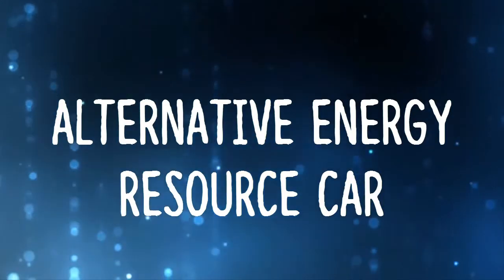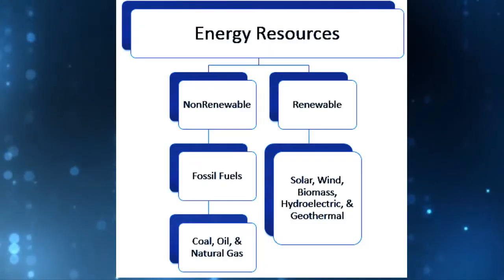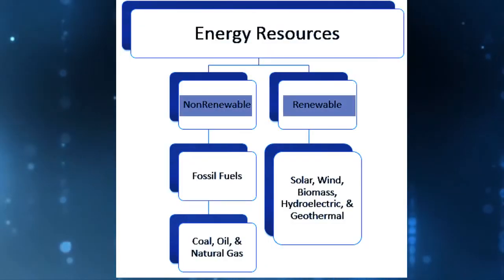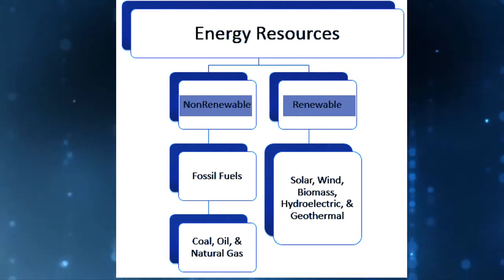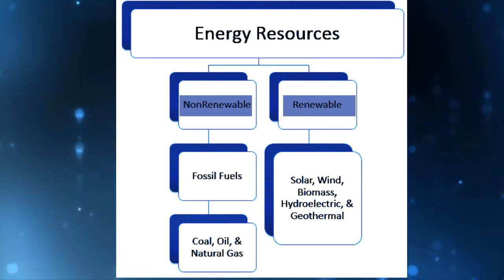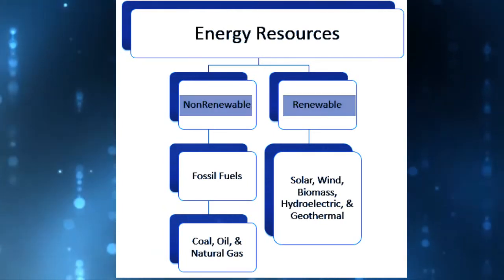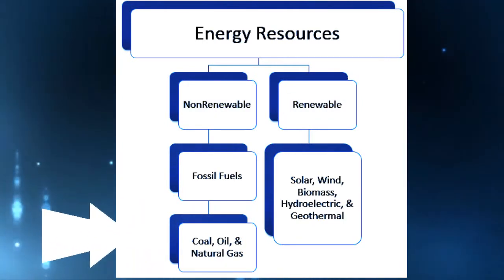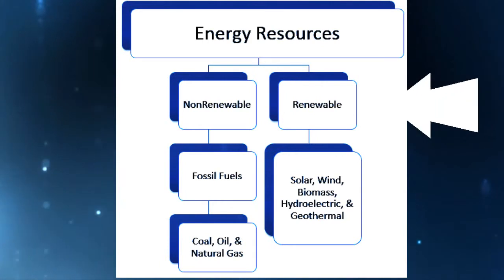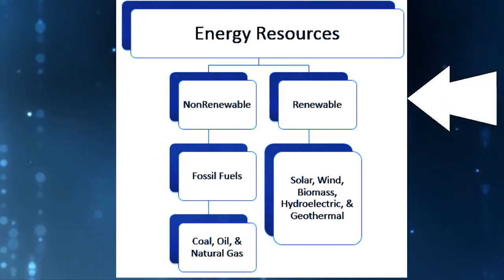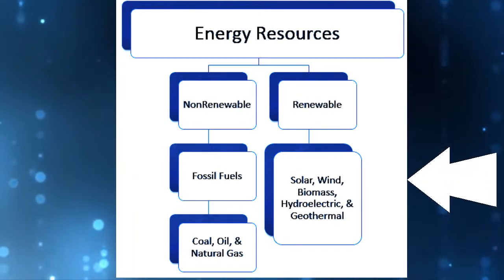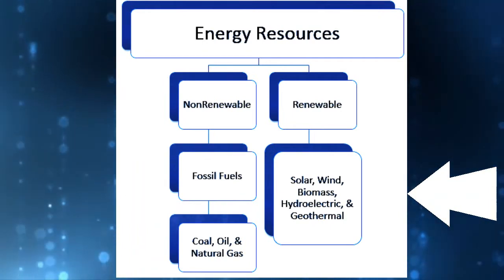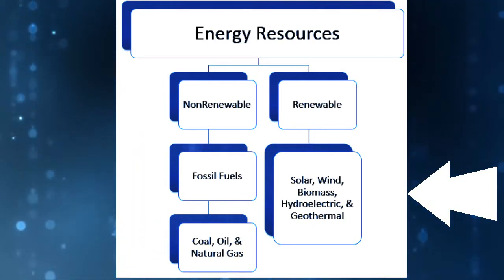Number 8. Energy resources have two categories: non-renewable and renewable resources. Non-renewable resources are consumed faster than they are made. An example would be fossil fuels, which include coal, oil, and natural gas. Renewable resources can be replenished as fast as they are consumed. Examples are solar, wind, and hydroelectric energy, as well as biomass and geothermal energy.